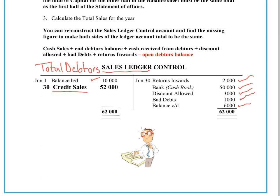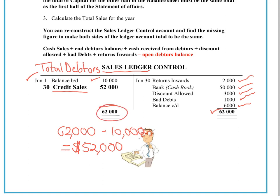Adding up the credit side gives $62,000. We had a balance at the beginning of the month of $10,000. So the difference between $10,000 and $62,000 means the missing credit sales figure would be $52,000. That's simple mathematics, and it's where the T-account is wonderful — mathematically you can't have $62,000 on the credit side with only $10,000 at the top as your balance brought down, so the missing information is $52,000 for credit sales.